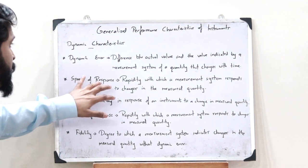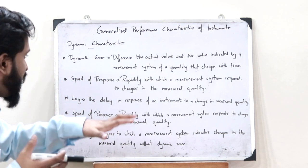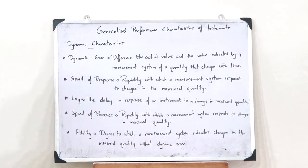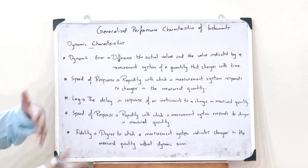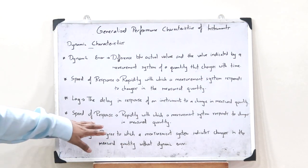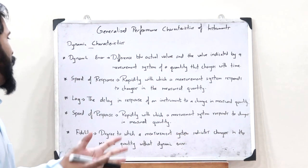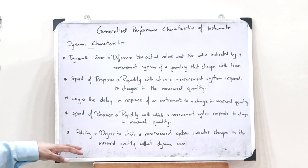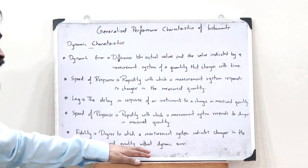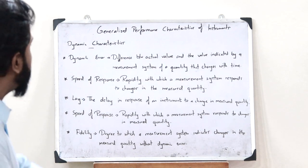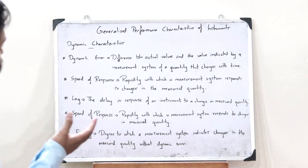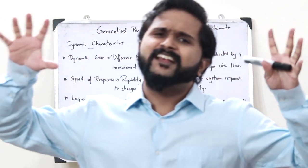Speed of response is the rapidity with which a particular measurement system can respond to a change in the measured quantity. Lag is a delay in the response of an instrument to a change in the measured quantity. Finally, fidelity is the degree to which a measurement system indicates changes in the measured quantity without dynamic error. These are the dynamic characteristics associated with a measurement instrument.